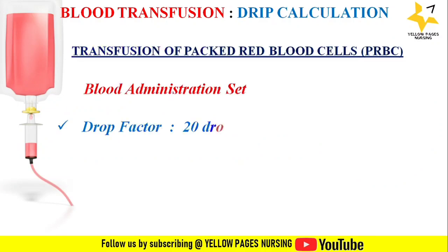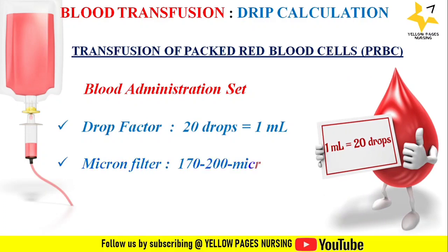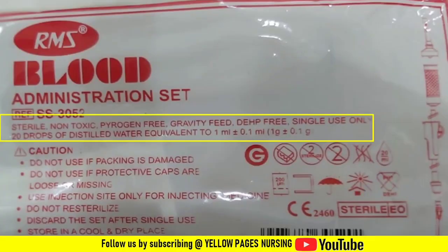The blood administration set has a drop factor of 20 drops equal to 1 ml — that is, the drop factor is the number of drops in 1 ml. The blood transfusion set also has a micron filter of about 170 to 200, which filters micro-aggregates and prevents the accumulation of clots in the filter. Both the drop factor and the micron filter size can be seen on the blood administration set package.